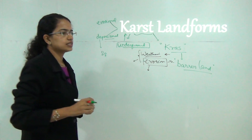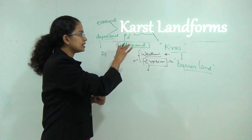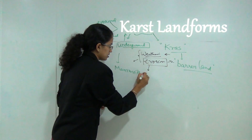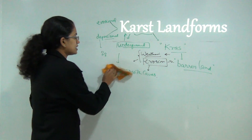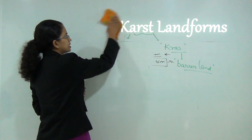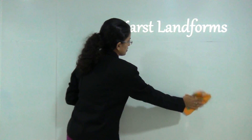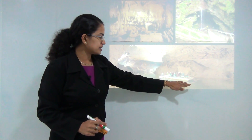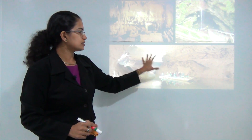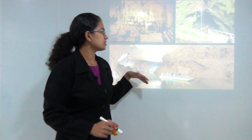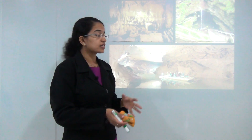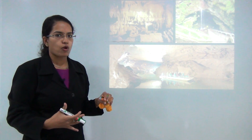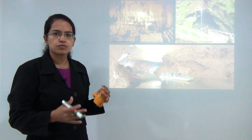Most of the karst features are seen in Slovenia and Yugoslavia. One of the largest karst topographies is found in Mammoth Caves in Kentucky, which is considered the world's largest underground cave system. You can see some beautiful landforms from Mammoth Caves, including a river. To understand this topic today, we will be seeing how the different landforms are formed and understanding the process and mechanism of formation of karst landforms.